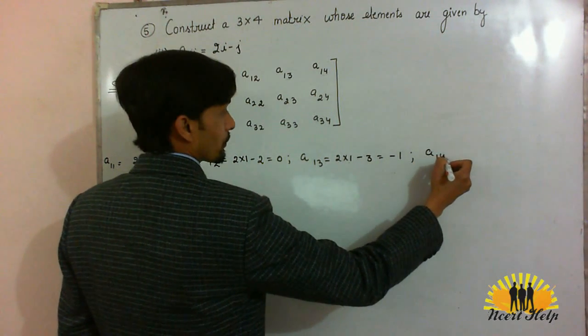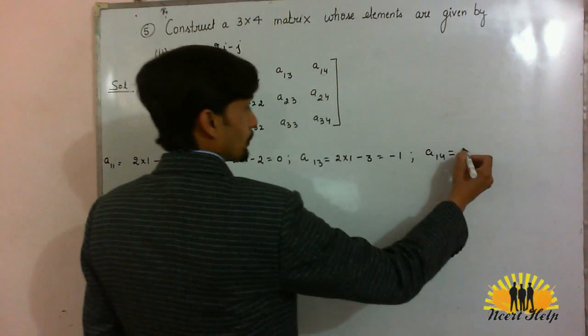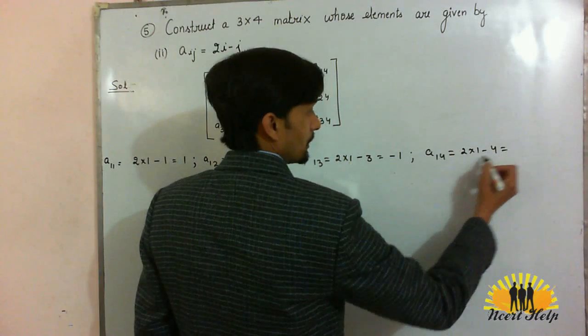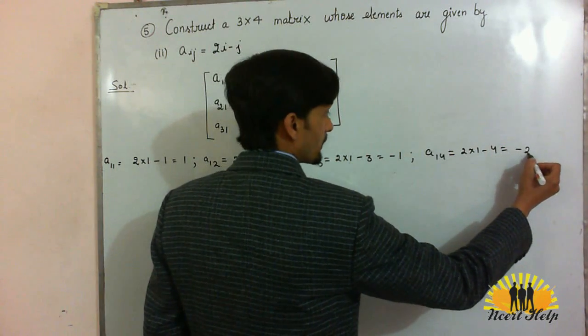A14, 2 into 1 minus 4. 2 minus 4 is minus 2.